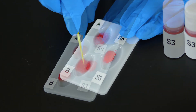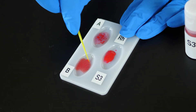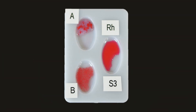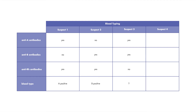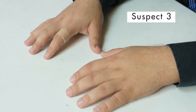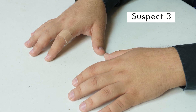Now we test the blood of suspect 3. The cells in well A and well B are sticking together, but the cells in the Rh well are not reacting. We conclude that this blood type is AB negative. The blood of suspect 3 matches the blood found at the crime scene, so it is probable that suspect 3 took the sandwich.